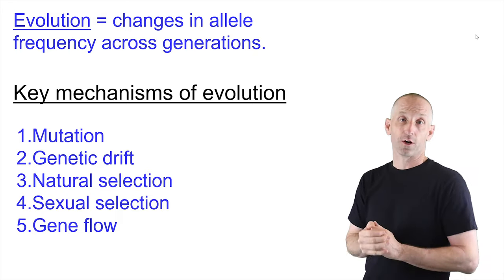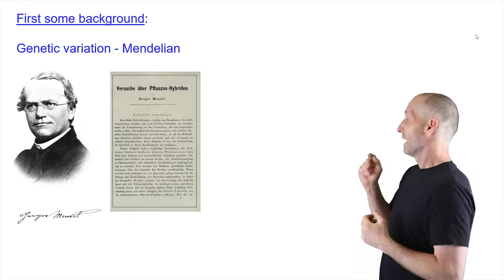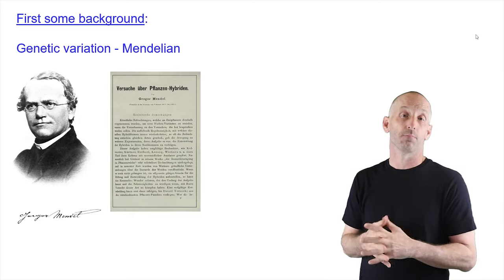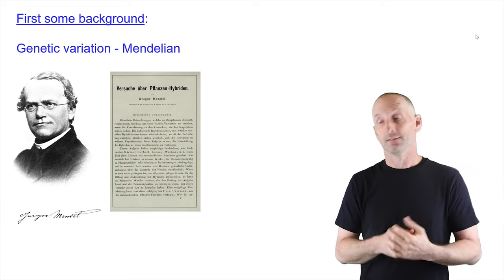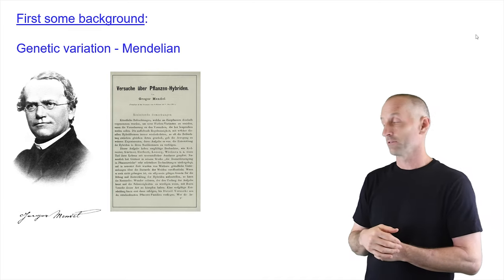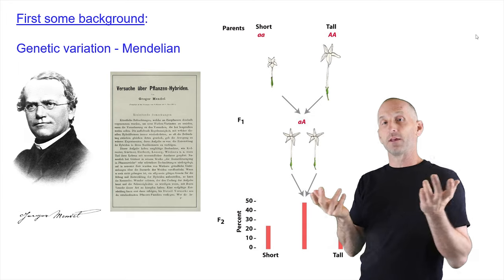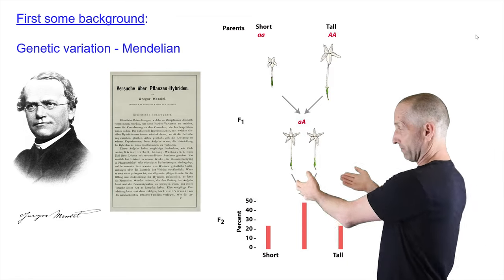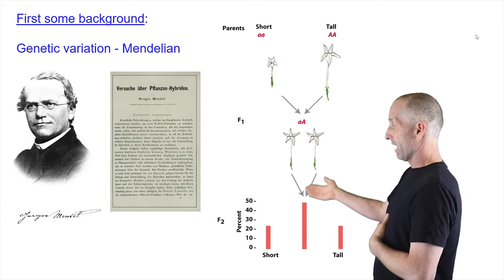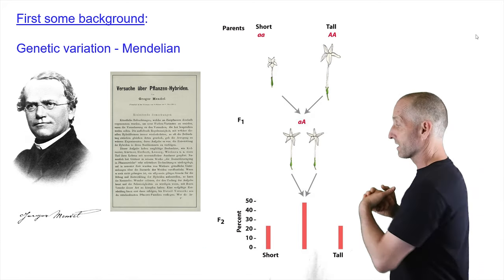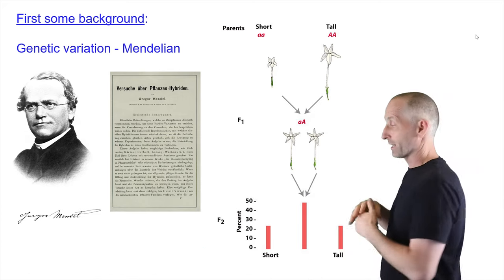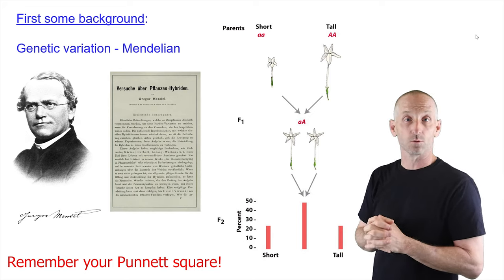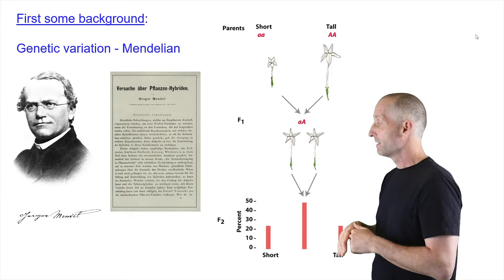To talk about evolutionary mechanisms, I first need a reminder about genetic variation. We tend to think about genetic variation in a Mendelian context — the classic Gregor Mendel's peas. The Austrian monk basically discovered the rules of heredity, which were lost for about 50 years before being rediscovered in the early 1900s. Short peas have allele little-a (homozygous little-a), crossed with homozygous big-A to generate all heterozygotes, which in this case are all intermediate in height. Crossing the heterozygotes together gives back 25% homozygous little-a, 25% homozygous big-A, and 50% heterozygotes.